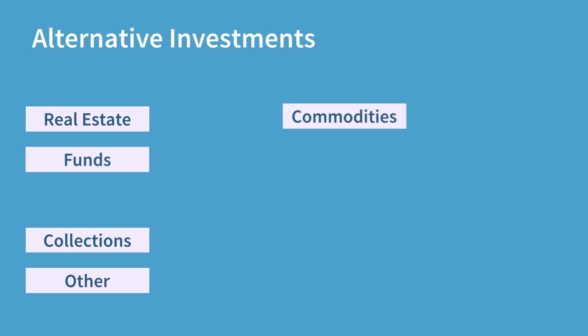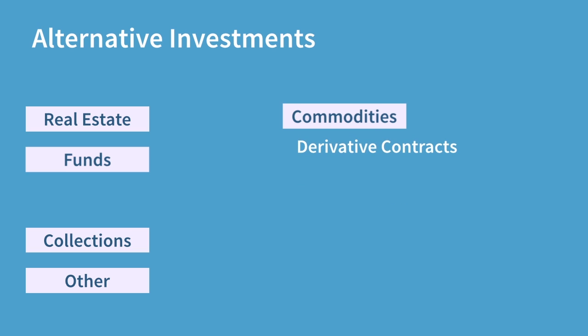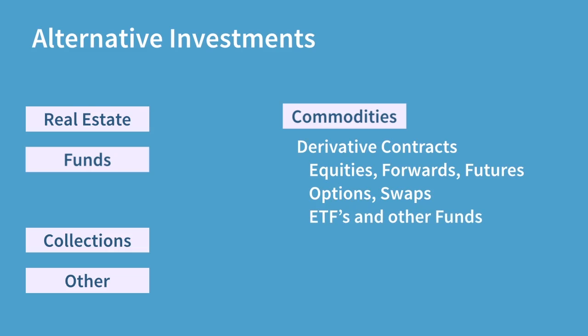Moving on, we have commodities. When we talk about commodities we are generally talking about agricultural products, energy products and precious metals — corn and wheat, oil and gas, gold and silver. Although a direct investment can be made into a physical delivery of these products, investments are generally done through derivatives. This may come in the form of a linked equity security, an OTC forward, an exchange regulated futures contract, or an option or a swap, depending on the investor and the type of risk they are looking to undertake. Another way is to look at various ETFs and managed funds which offer exposure to a certain particular type of risk within this area.